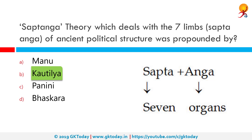The seven limbs are: King, Amatya or bureaucrats, Janapada or territory, Durga or fort, Kosa or treasury, Danda or coercive authority, and Mitra or ally.